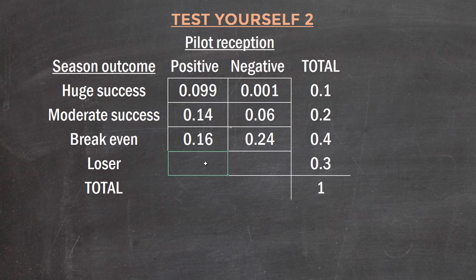And of the losers we know that 20% of this 30% received positive pilot feedback. So that's 0.2 times 0.3, giving us 0.06.